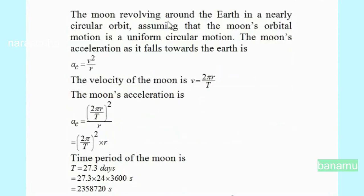The moon revolves around the earth in a nearly circular orbit. Assuming that the moon's orbital motion is uniform circular motion, the moon's acceleration is AC = v²/R. The velocity of the moon is V = circumference of the orbit divided by the period, so V = 2πR/T.